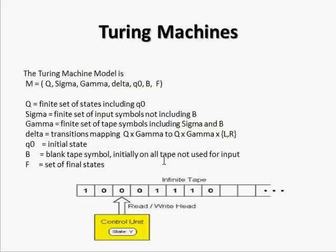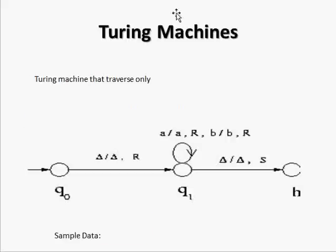Let's take an example and discuss in more detail how a Turing machine actually works. This is a very simple Turing machine where we will simply traverse from left to right and consume every symbol.